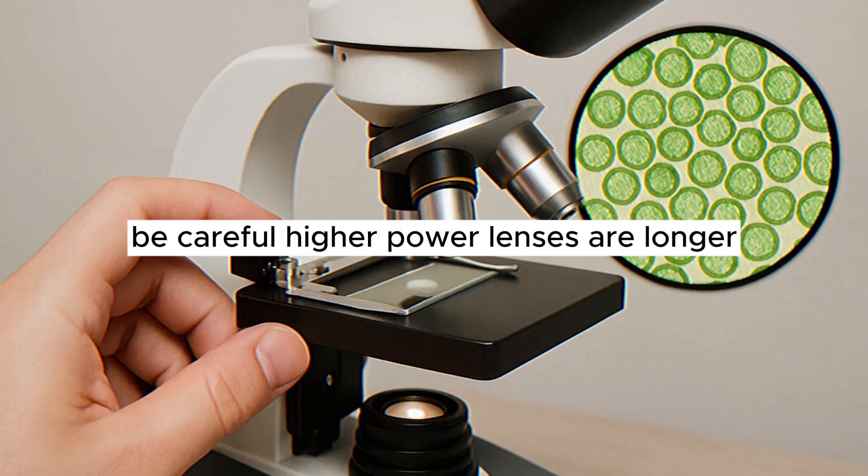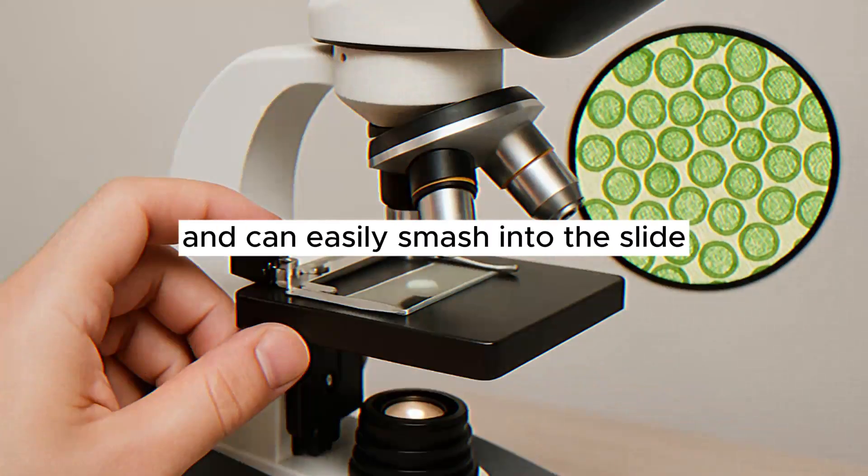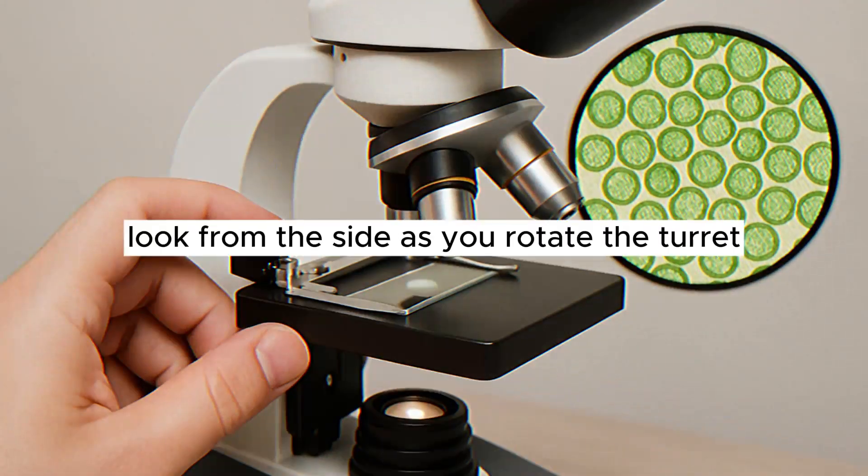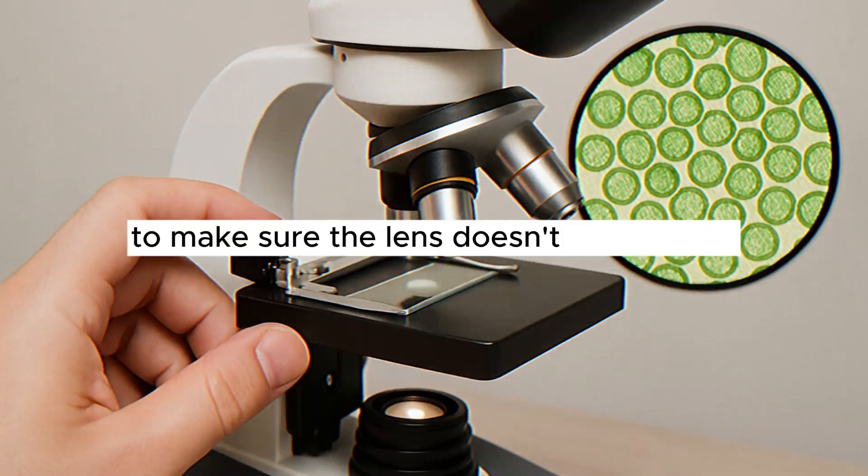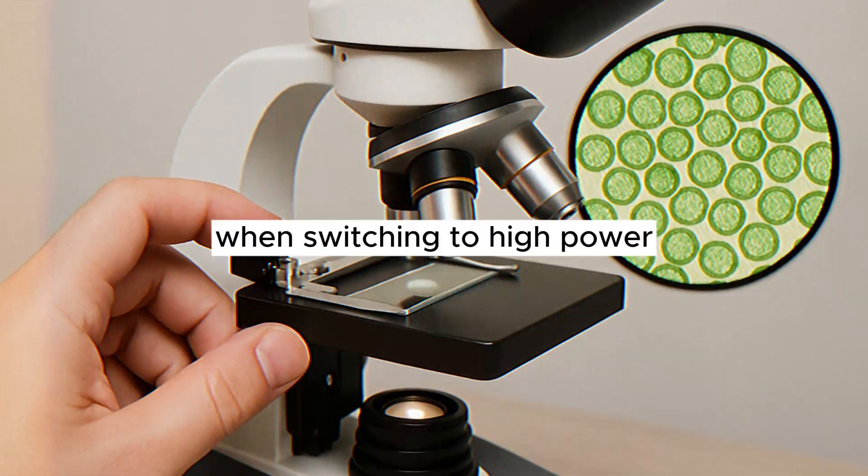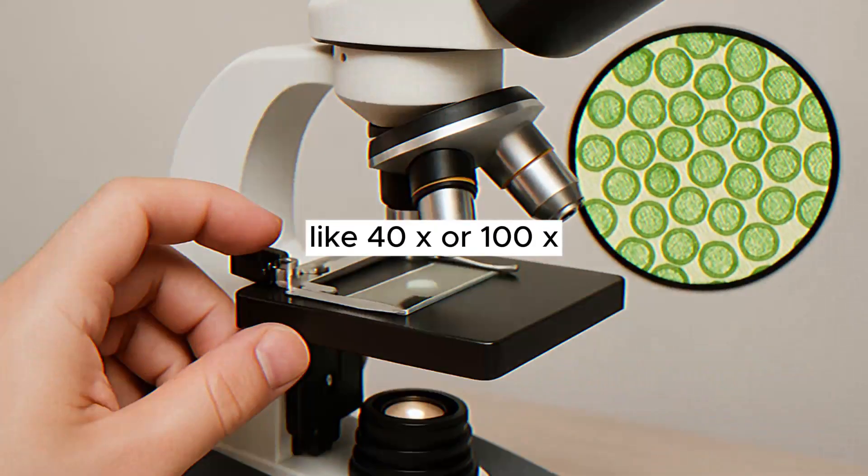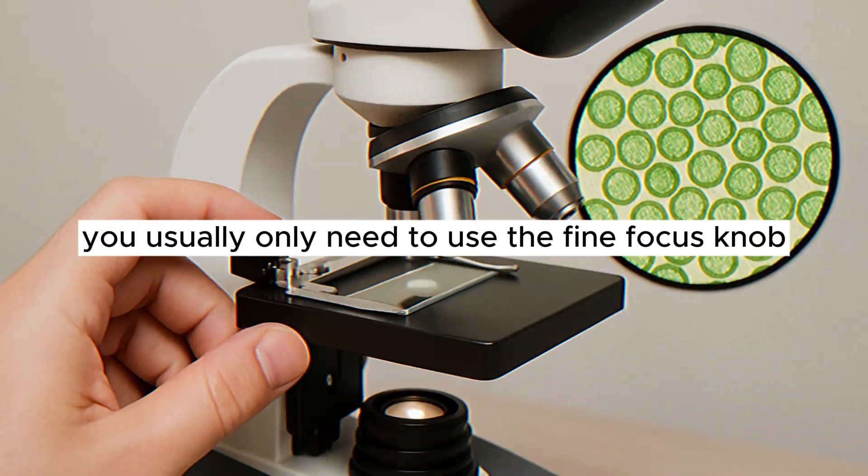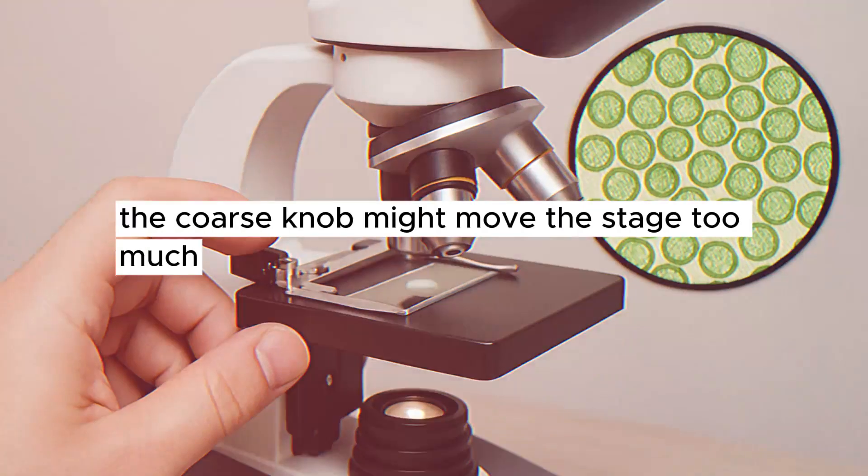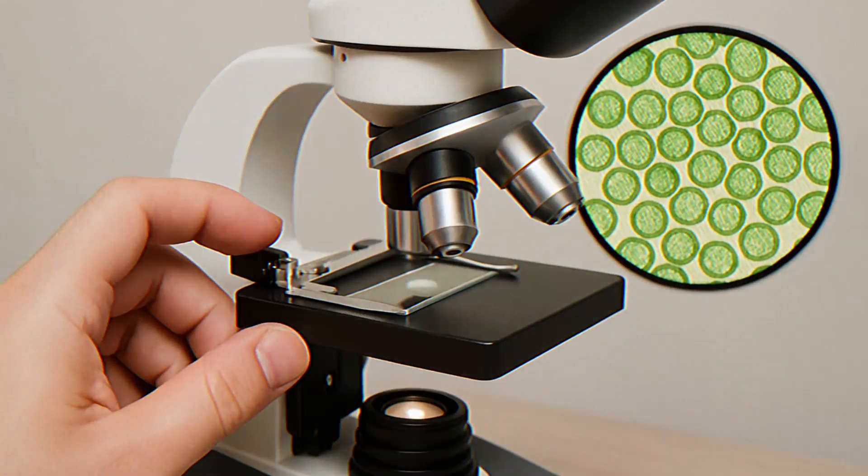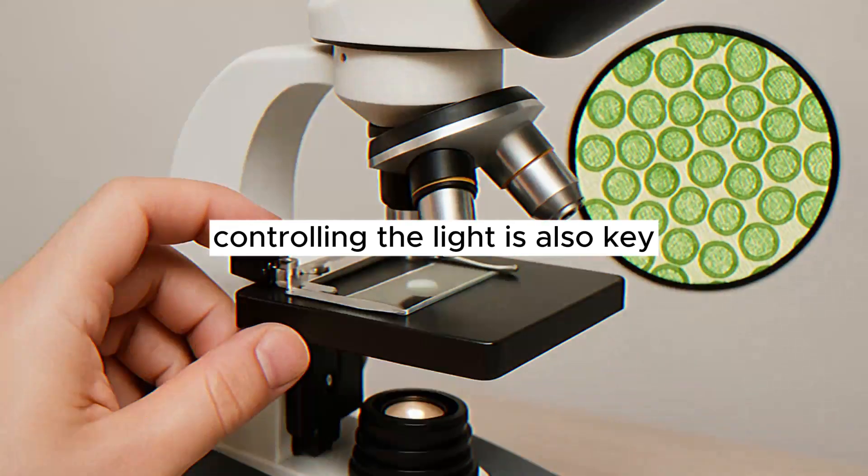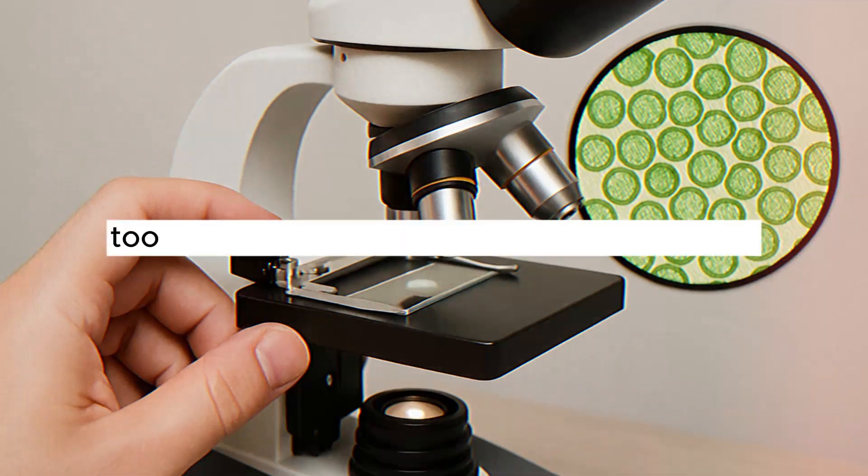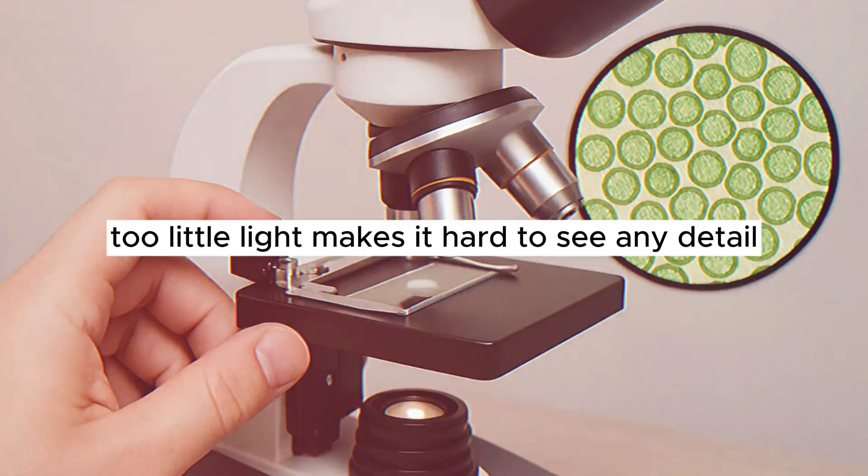Be careful! Higher power lenses are longer and can easily smash into the slide if you're not paying attention. Look from the side as you rotate the turret to make sure the lens doesn't hit the slide. When switching to high power, like 40x or 100x, you usually only need to use the fine focus knob for tiny adjustments. The coarse knob might move the stage too much. Controlling the light is also key. Too much light can wash out a thin specimen, making everything glare white. Too little light makes it hard to see any detail.